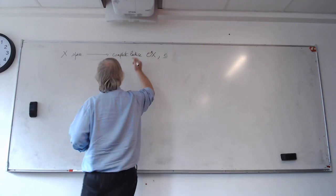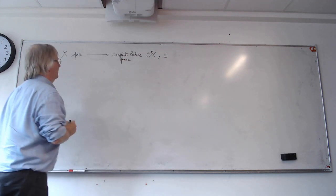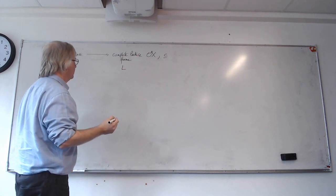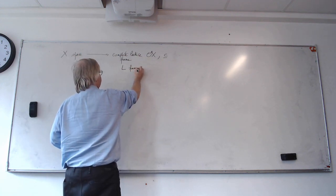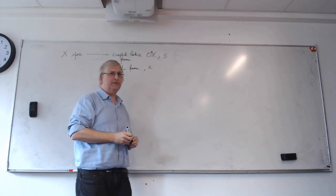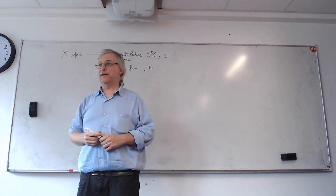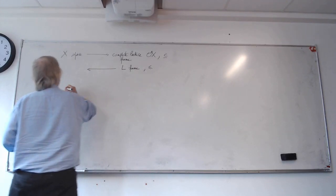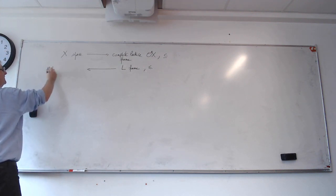That complete lattice was also in fact a frame, which is even better. So now the question is: we start from a complete lattice or a frame — a frame gives better results. Let's say it's a frame, ordered by some ordering which I will always write less than or equal to. And we'll try to go the other way. What we had done earlier is to define a new set, pt of L — pt for point.